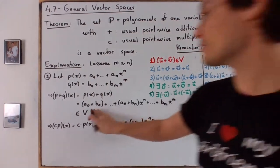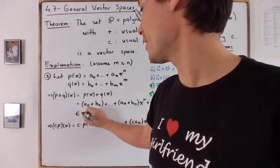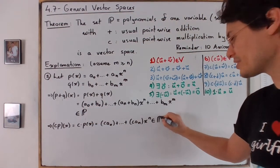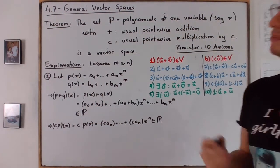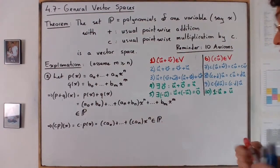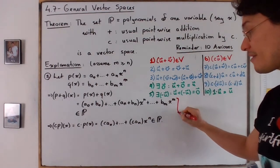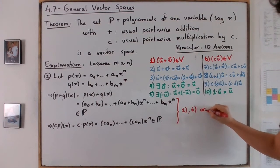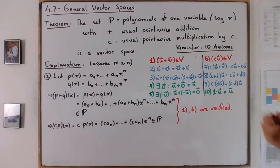And I say v here, but I should say like p, right? What I mean by this is that both of these are polynomials. And from there, we can see that both one and six are verified. So one, six are verified.